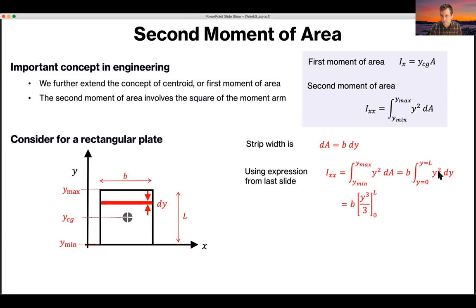And this time, because it's y squared, you get y cubed over 3. And it's between, and the left would be here. So this integral simplifies because this is 0, so you just have B L cubed over 3. So the second moment of area around the x axis is the base times the length cubed divided by 3.